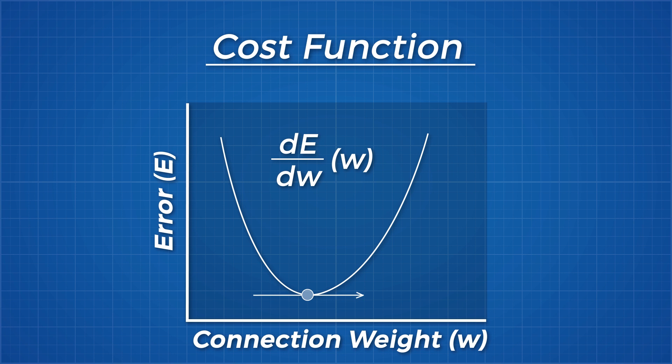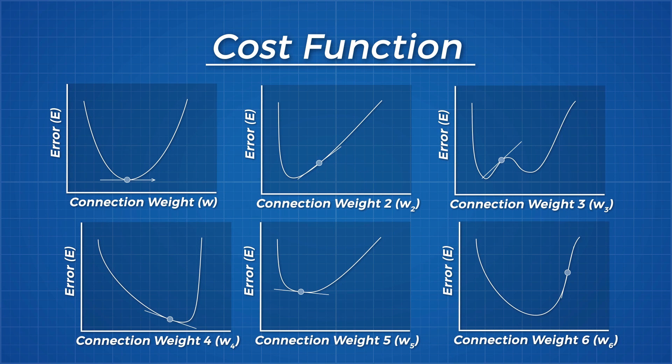Therefore, we need a cost function that measures the average amount that the model's predictions vary from the correct values. The mean squared error cost function is the most common cost function used to address this, and it looks like this.